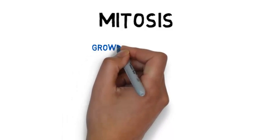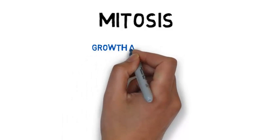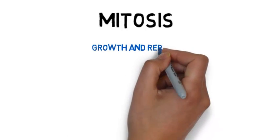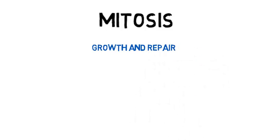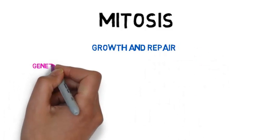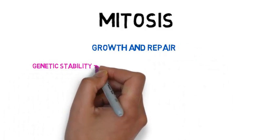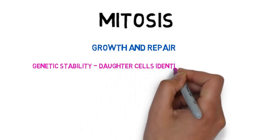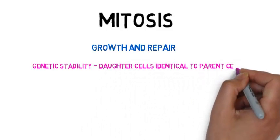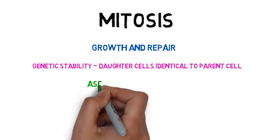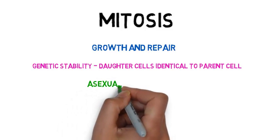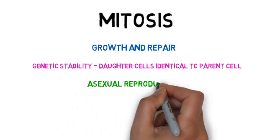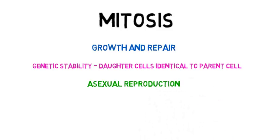In this presentation, we're going to look at cell division by mitosis. Mitosis is a particular type of cell division, and it is specifically for growth and repair, so the maintenance of tissue. It ensures genetic stability, so the daughter cells — the cells produced from the parent cell — are identical. It also occurs in asexual reproduction.